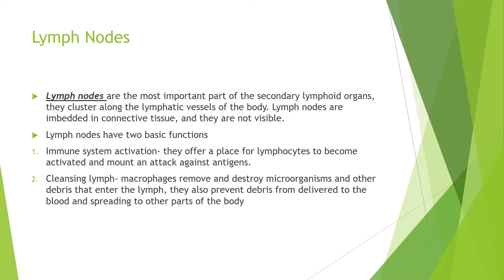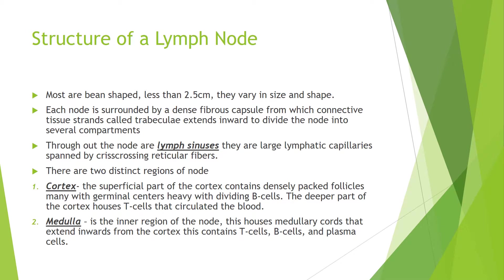Lymph nodes can also become secondary cancer sites if cancer cells become trapped in the node. Most are bean-shaped and less than two and a half centimeters, varying in size and shape. Each lymph node is surrounded by a dense fibrous capsule from which connective tissue strands called trabeculae extend inward to divide the node into several compartments. Throughout the lymph node are lymph sinuses, which are large lymphatic capillaries spanned by crisscrossing reticular fibers.